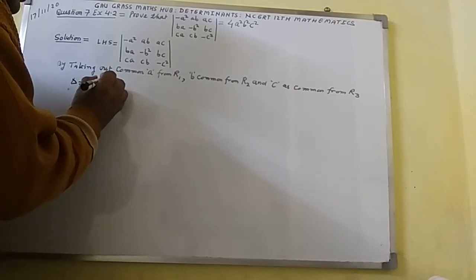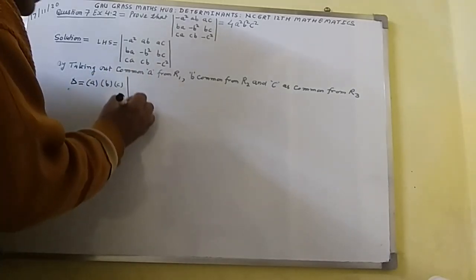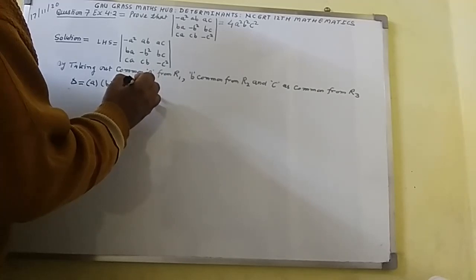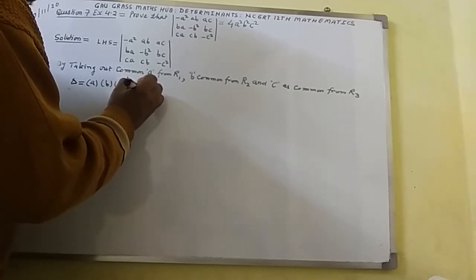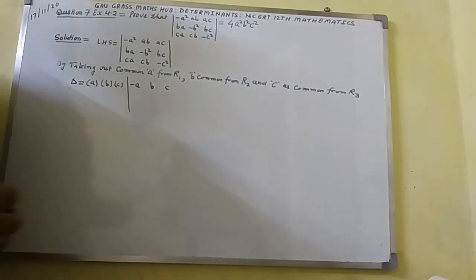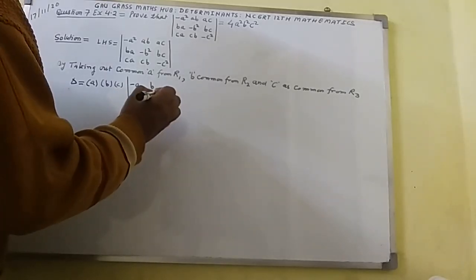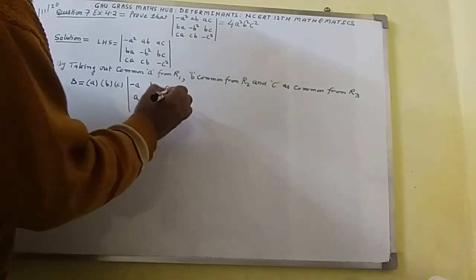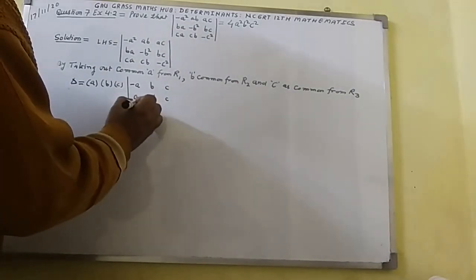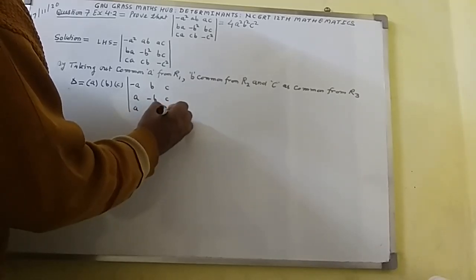Taking A, B, and C as common factors, the determinant will become ABC times the determinant with first row (−A, B, C), second row (A, −B, C), and third row (A, B, −C).